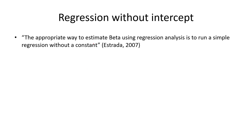Before we move to Stata, one last thing: Estrada's paper explicitly states that we need to use regression without a constant. The appropriate way to estimate beta using regression analysis is to run a simple linear regression without a constant. That is where our understanding of regression without the intercept term comes in handy. Let's move to Stata and look at how the code would work.